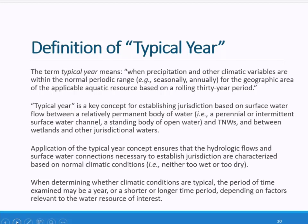As you've seen, typical year appears throughout the categories of jurisdictional waters. Typical year is a key concept for establishing jurisdiction based on surface water flow between a relatively permanent body of water — i.e., a perennial or intermittent surface water channel, or standing body of open water — and TNWs or territorial seas, and between wetlands and other jurisdictional waters. A typical year isn't necessarily describing a period of 365 days; it can be shorter or longer depending on the water resource of interest.